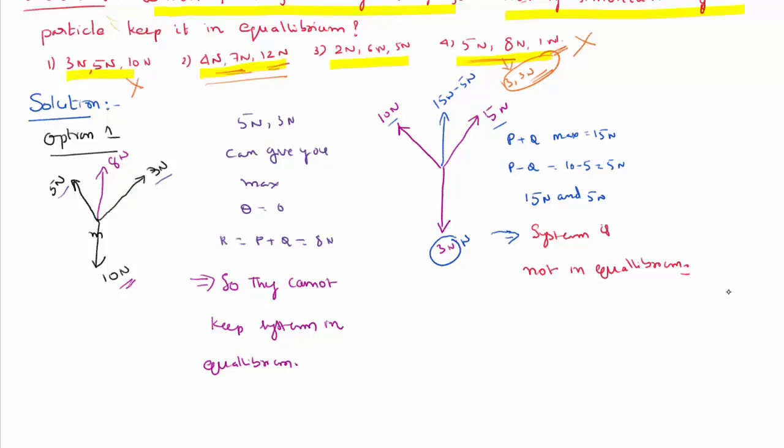This cannot be in equilibrium. We have already checked. 4 and 7 gives 11, 4 minus 7 gives 3, but this has to be compensated by 12, which is also not possible. So the only possibility remaining is Option 3.